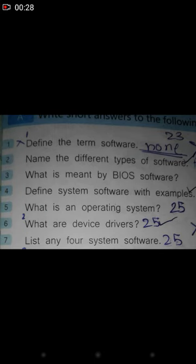Write short answers to the following questions. Number one: define the term software. The answer to this question you can see on page number 23. Number two: name the different types of software. The answer is on page number 24.